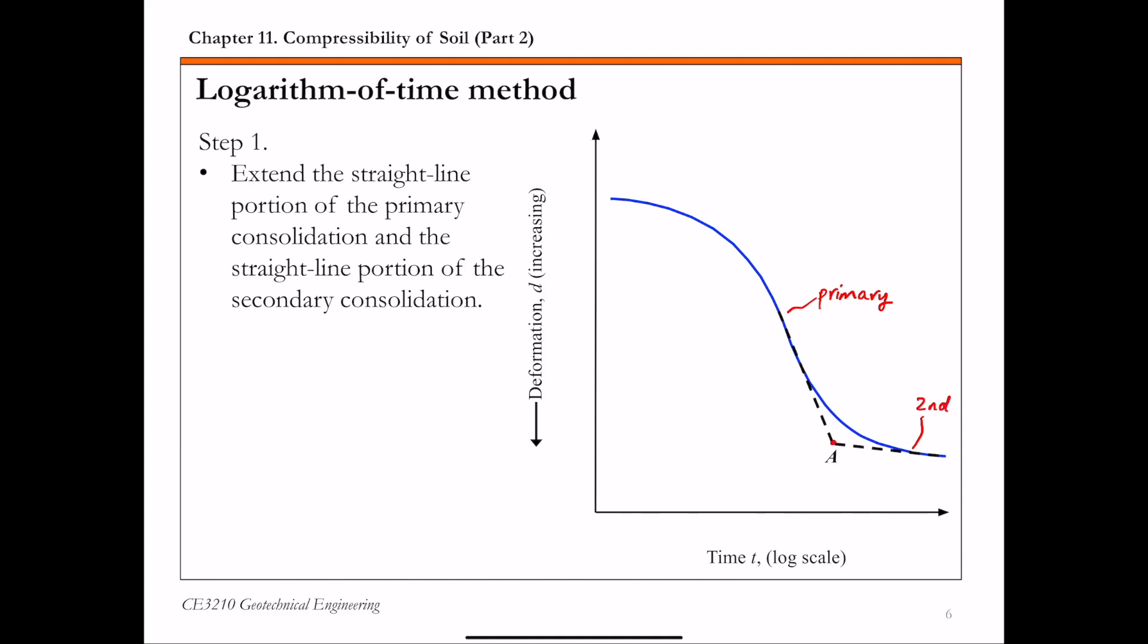These two extensions intersect at point A. The corresponding deformation of this intersection point, we call it d100. That's basically the deformation at 100% primary consolidation.